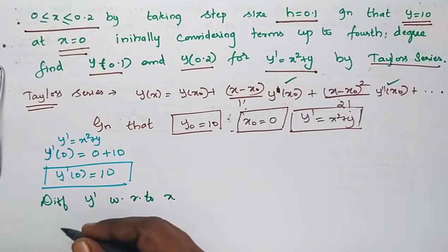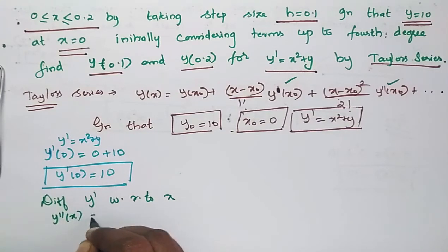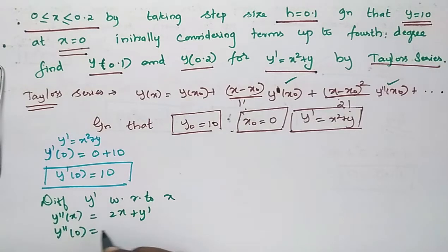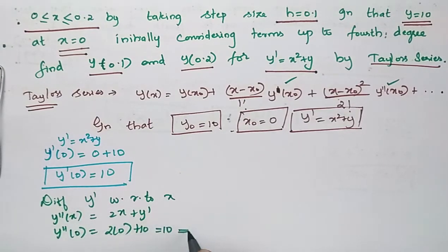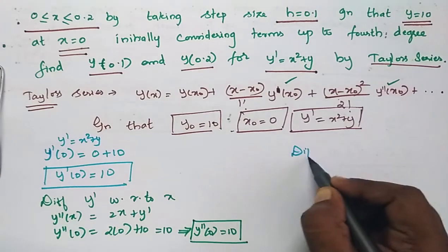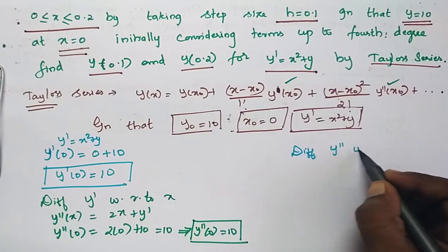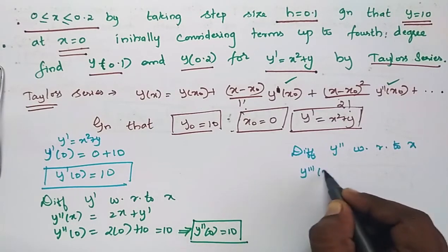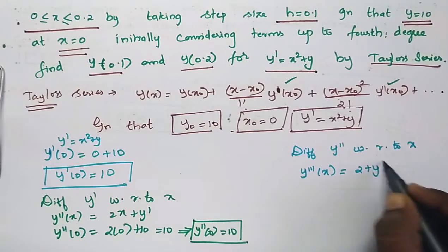Differentiating y' = x² + y gives y'' = 2x + y'. So y''(0) = 2(0) + 10 = 10. Therefore y''(0) = 10.